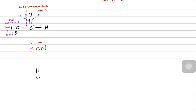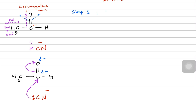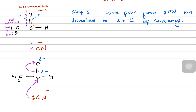Starting from the ethanal molecule, a cyanide ion is present in the surrounding. The oxygen was already partially negative and the carbon was already partially positive. The cyanide carbon donates its lone pair to the carbonyl carbon, because the carbonyl carbon is becoming increasingly partially positive. Step one: the lone pair from the cyanide ion is donated to the partially positive carbonyl carbon, which accepts it.